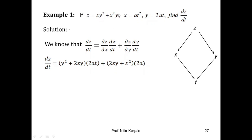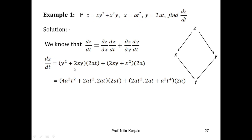∂z/∂y can be obtained by treating x as constant, giving ∂z/∂y = 2xy + x². Since y = 2at, dy/dt = 2a. This gives the full expression for dz/dt. You can further simplify it by substituting values for x and y in terms of t. You can pause the video and check the calculation.